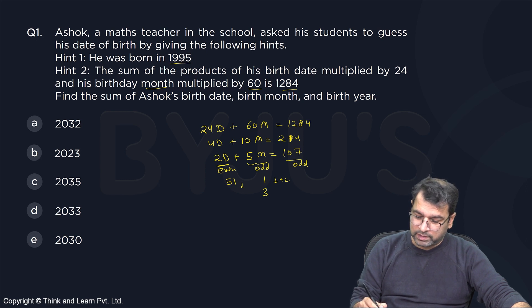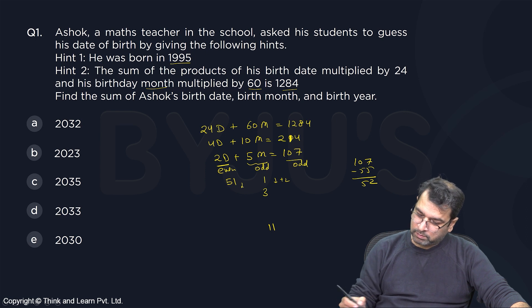If I go backwards, like the number of months can maximum be 12, but it has to be odd. So if I take 11, so 11 times 5 is 55. 107 minus 55 gives you what? 52. So that means D will come out to be 26. So this is one of the possibilities.